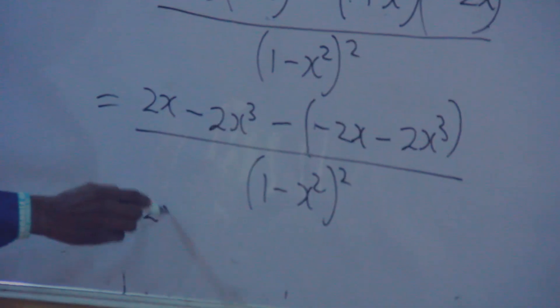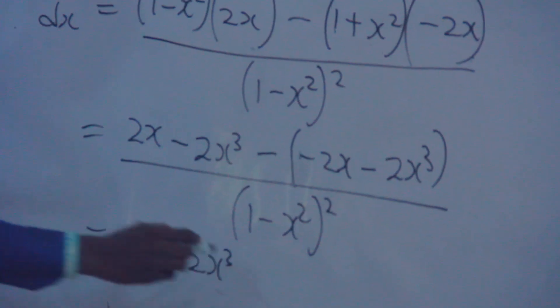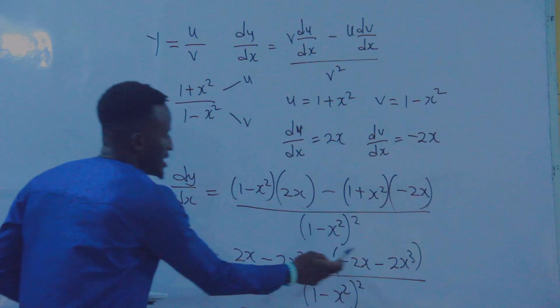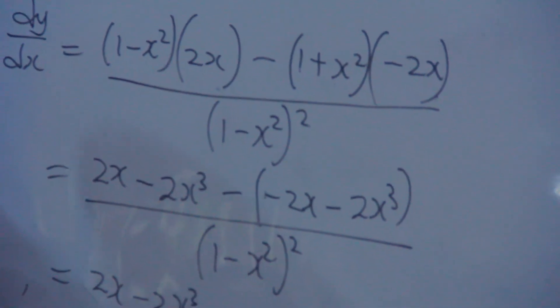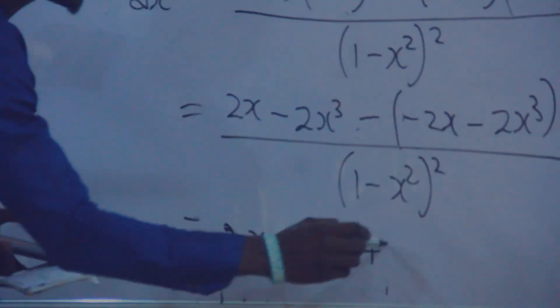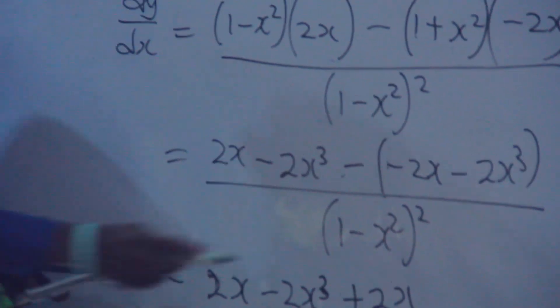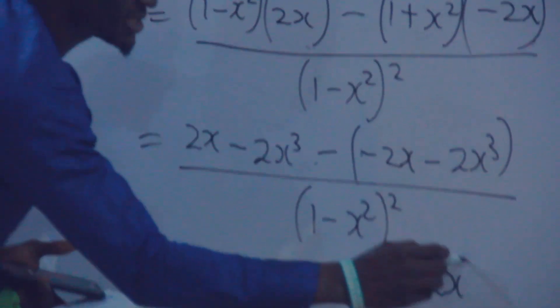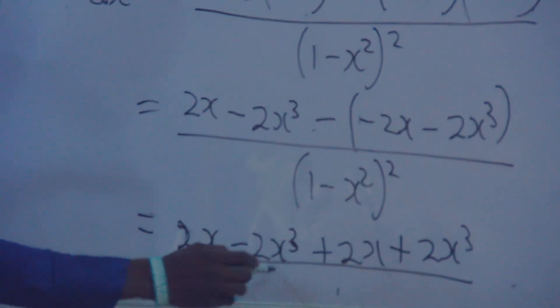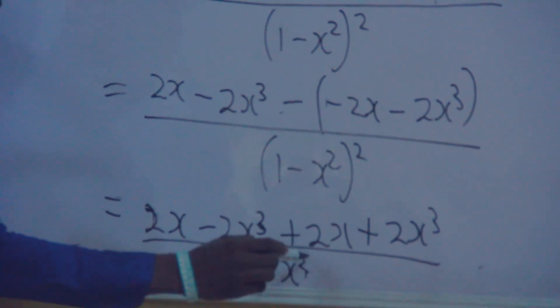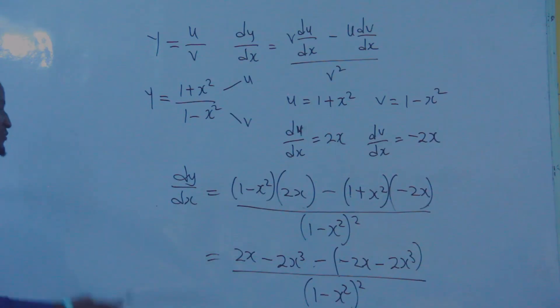Then the final answer: this will be 2x minus 2x cubed. When we open this bracket, minus times minus will be plus. That's plus 2x. Minus times minus here will also be plus 2x cubed. All over one minus x squared, squared.